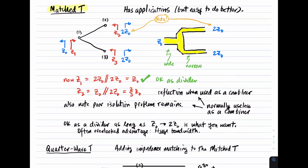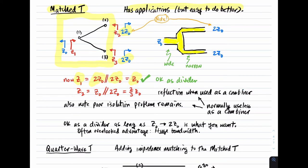Next, the matched T. This has some applications, but I'll show it's easy to do better. It will be the starting point for other schemes. The matched T is simple: we just wire everything together. The difference from the unmatched T is that we have in mind that the output ports are going to be 2Z₀ as opposed to Z₀. In order to use this scheme, the input is at Z₀ and the outputs are 2Z₀. If you're okay with that, this works because the input impedance is a parallel combination of 2Z₀ and 2Z₀, which is simply Z₀.